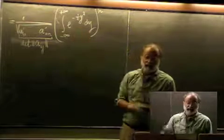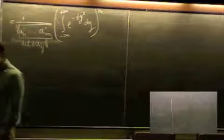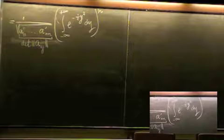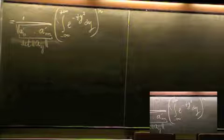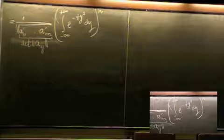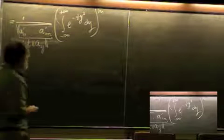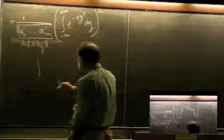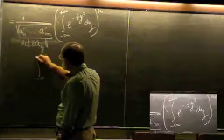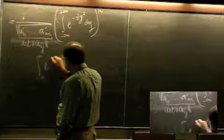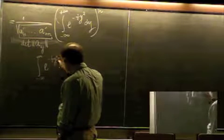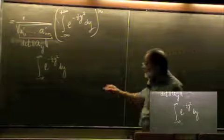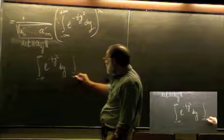Now, how to find the remaining integral — the integral of exp(−½ y²) dy? There was a very nice trick invented almost 200 years ago by Poisson.